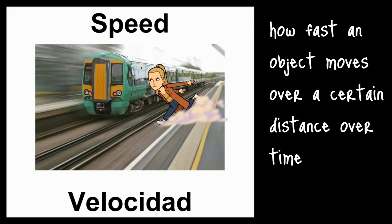Our last word is speed. Speed is how fast an object moves over a certain distance over time. For example, the train is moving fast from one point to another point — they are trying to get to their next location quickly. And my little bitmoji here is running super fast; she's going at a high speed to keep up with that train.